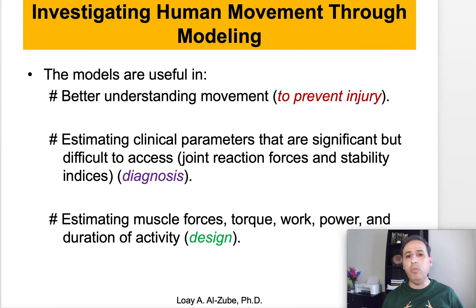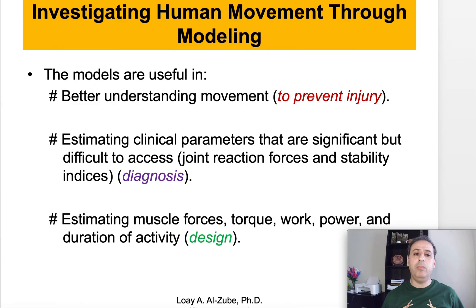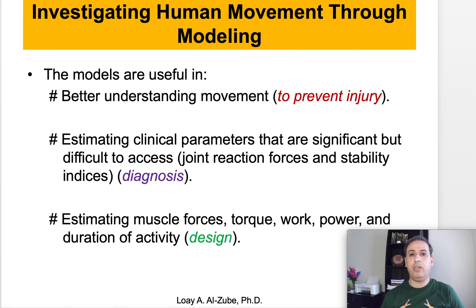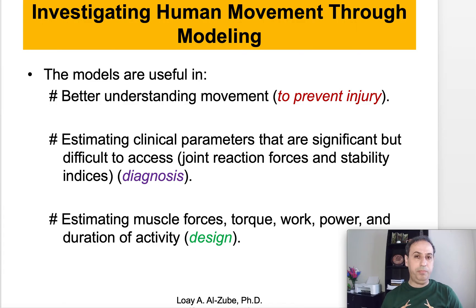If you want to investigate human movement through modeling, what are the things that the models will help us gain and obtain? If you use mathematical modeling, we have a better understanding of the movement, which is very useful in preventing injury, because we can tell people that under certain circumstances there is a high probability of, let's say, falling and breaking one of the bones. We don't want to be testing protocols and interventions on people, so models are very helpful to understand movement and predict when an injury could happen and prevent it.